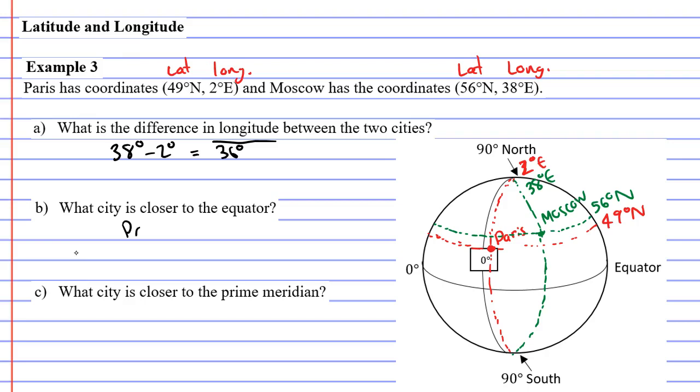So, which city is closer, Paris, okay, and what city is closer to the prime meridian? And the prime meridian is where your longitude is 0 degrees, and we can see that Paris is closer to that as well.